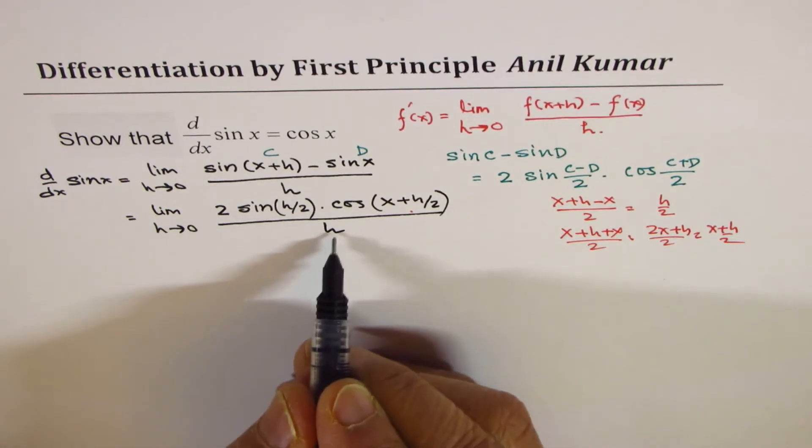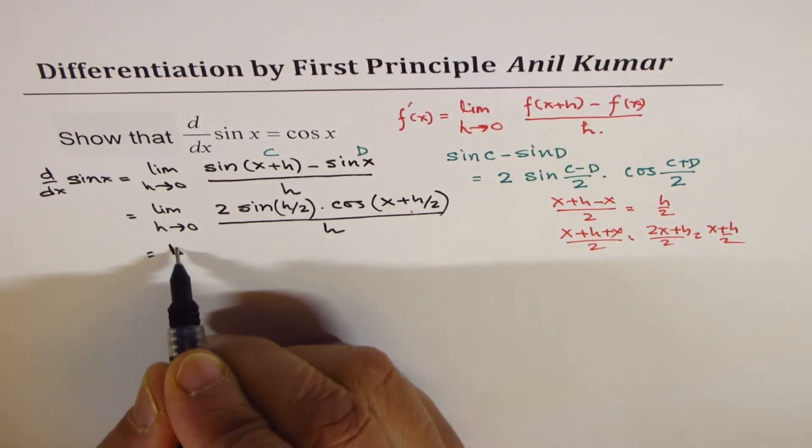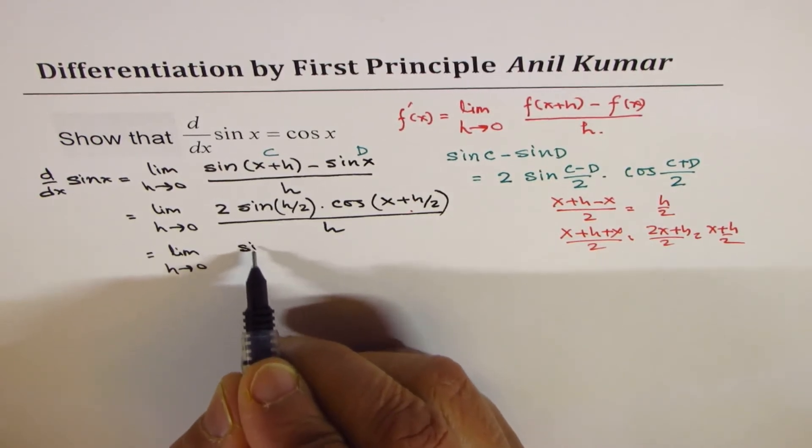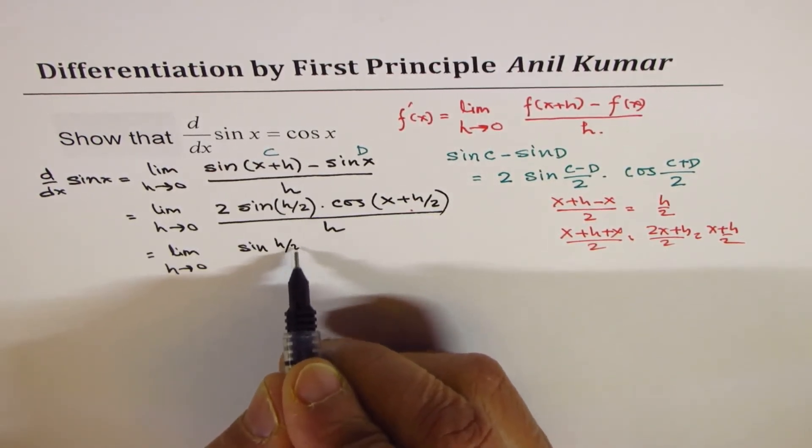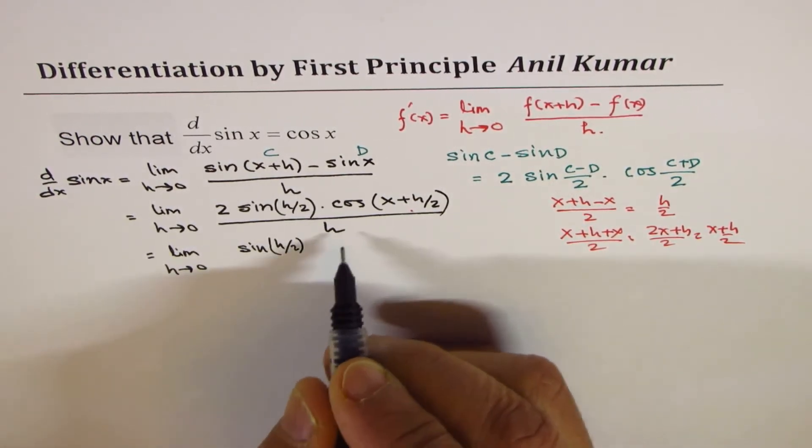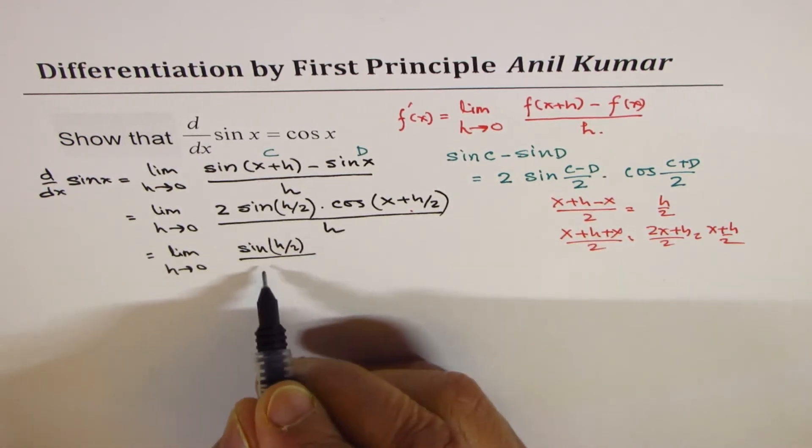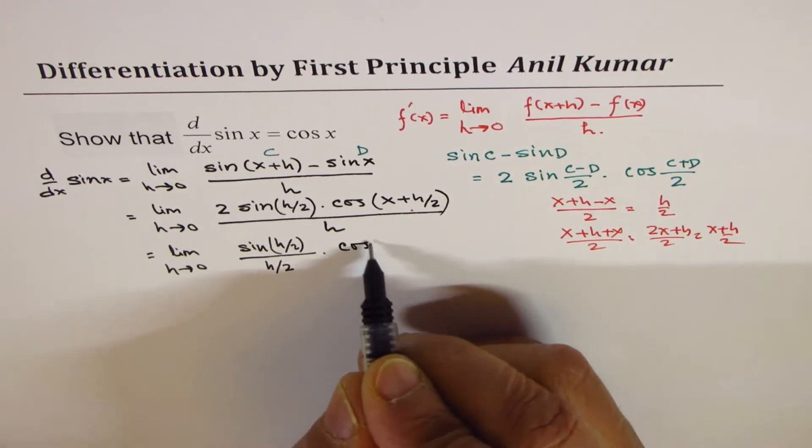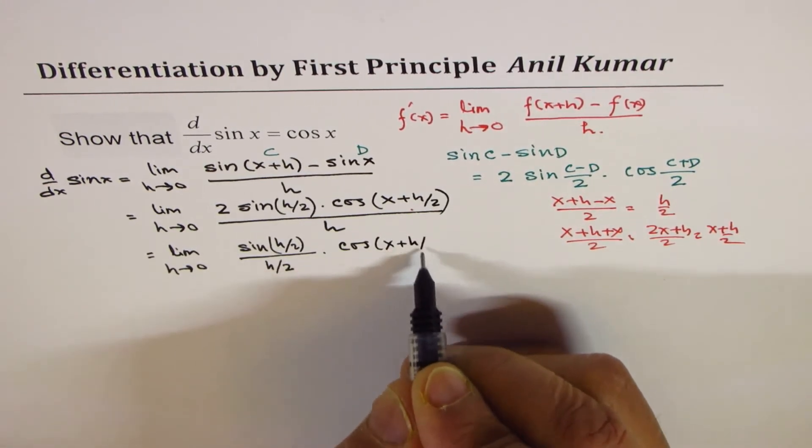Now, this 2 could be brought here, so we get limit h approaches 0, we have sine h by 2 over h by 2. And I am writing this as cos x plus h by 2. Does it make sense to you?